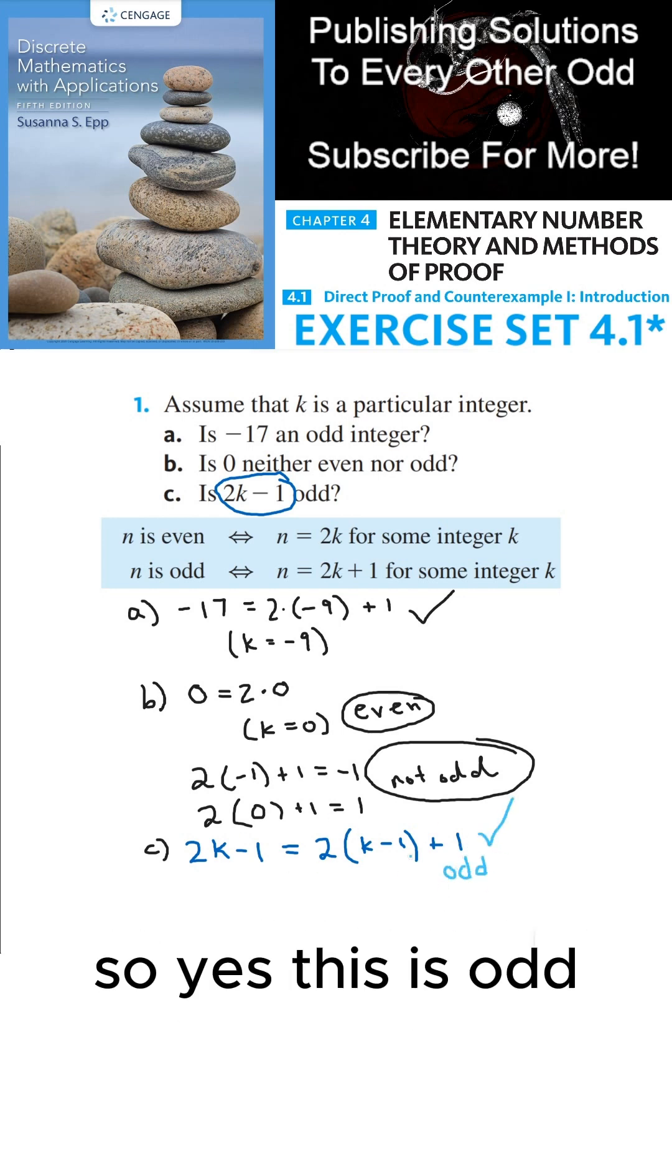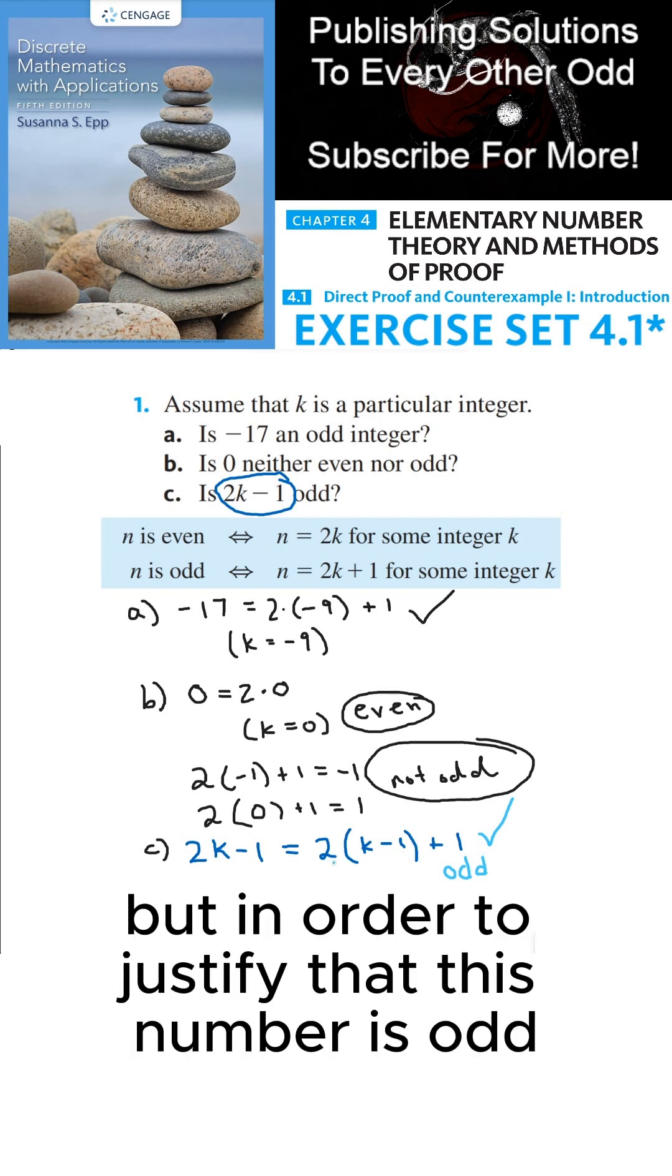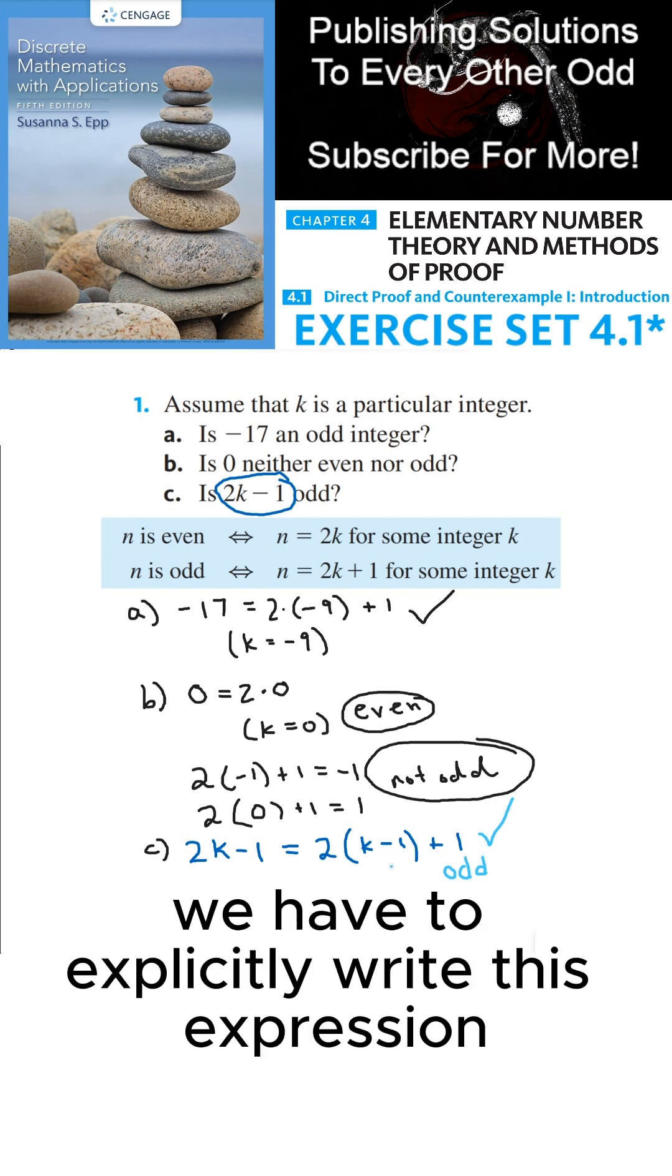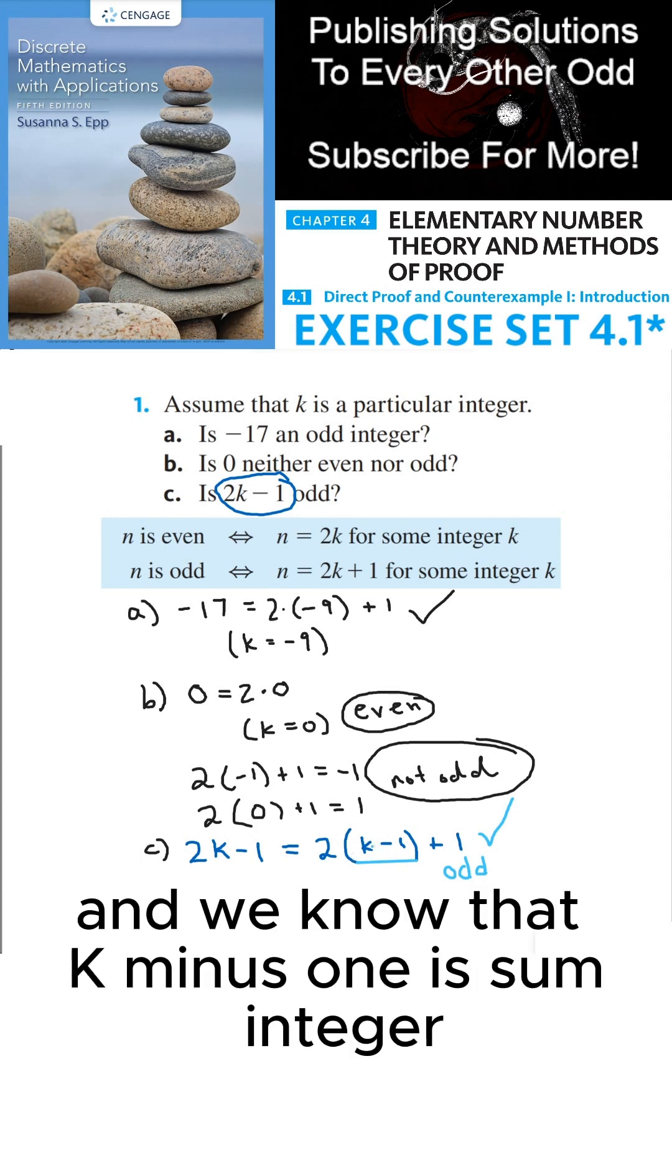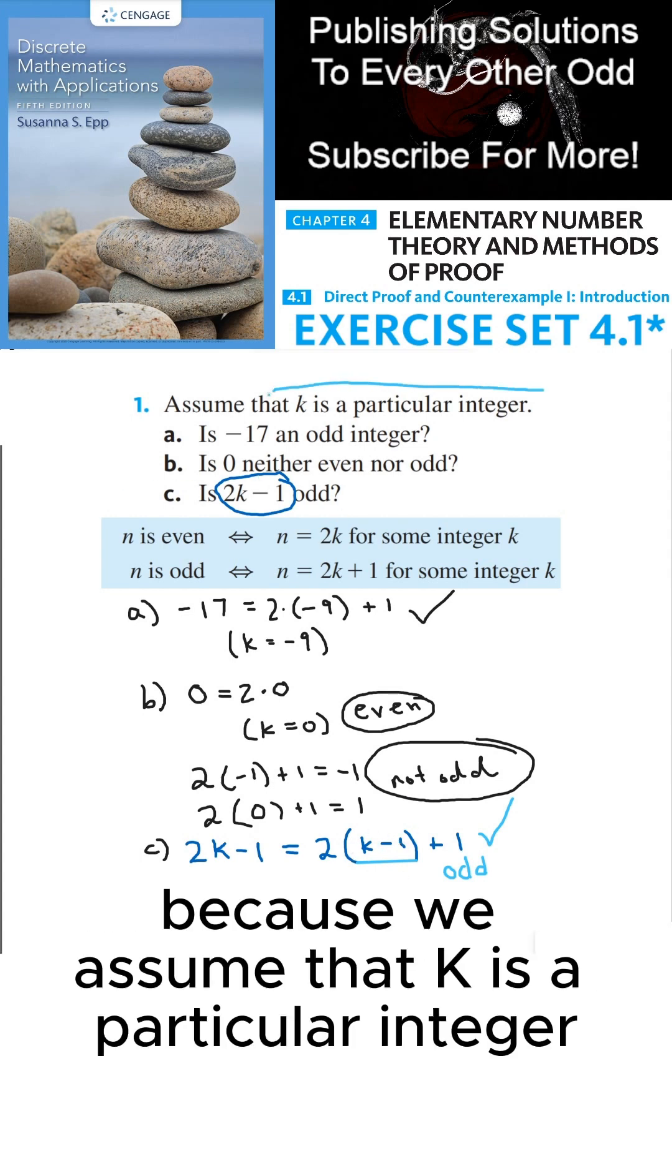So yes, this is odd. But in order to justify that this number is odd, we have to explicitly write this expression as 2 times some integer plus 1. And we know that k minus 1 is some integer because we assume that k is a particular integer.